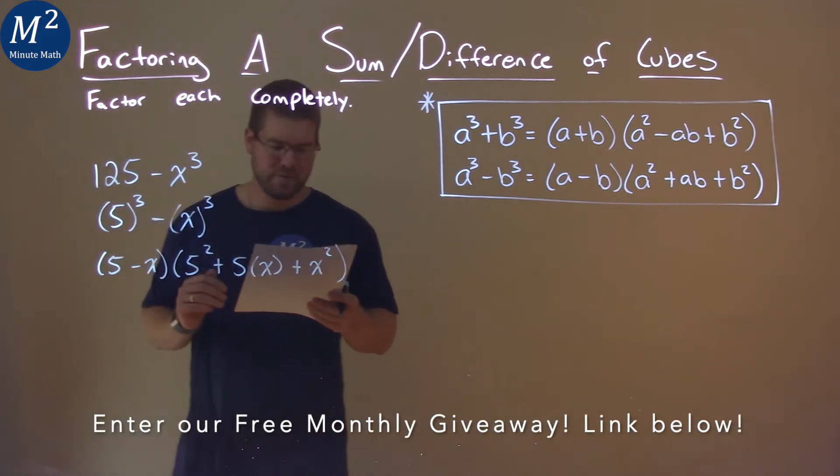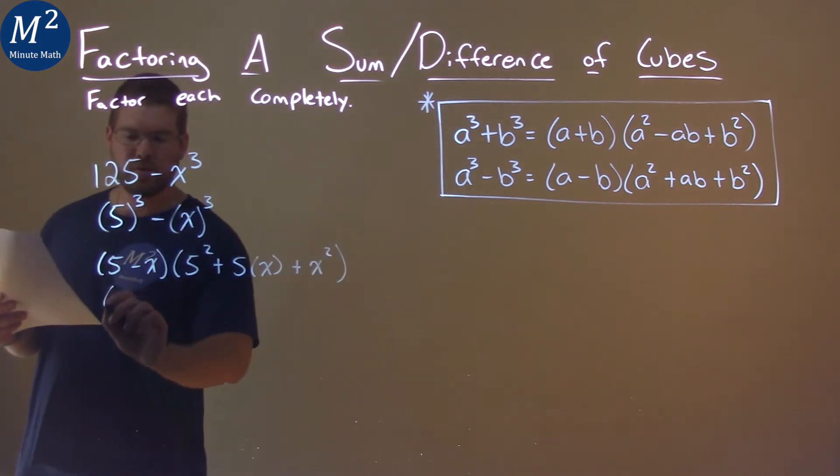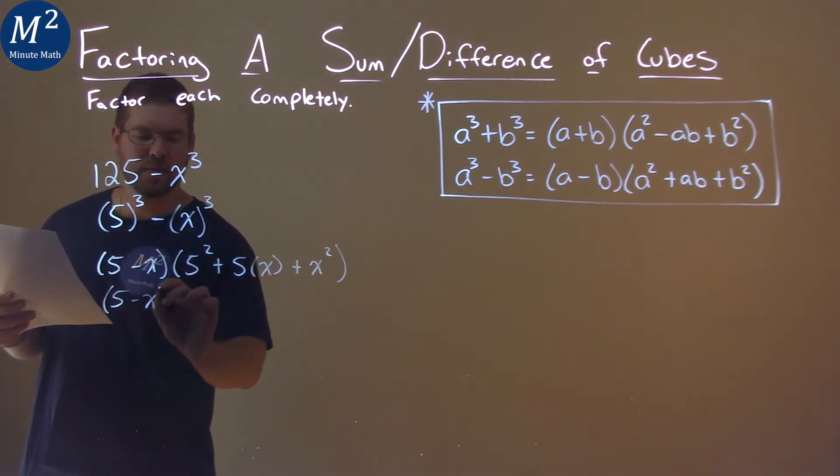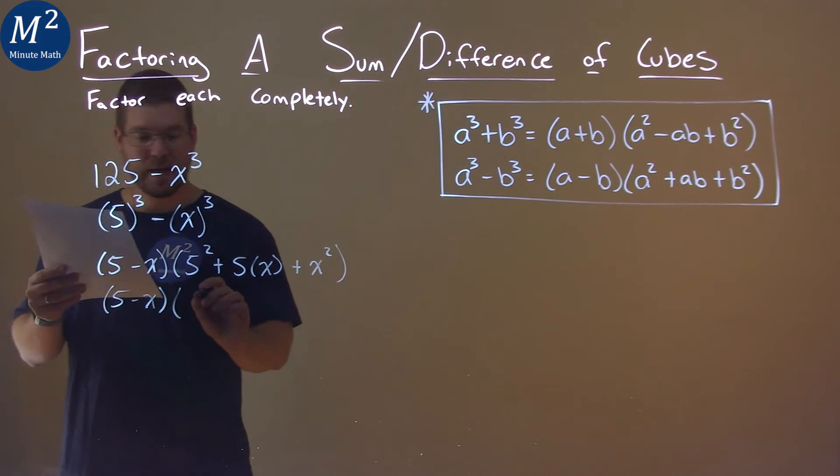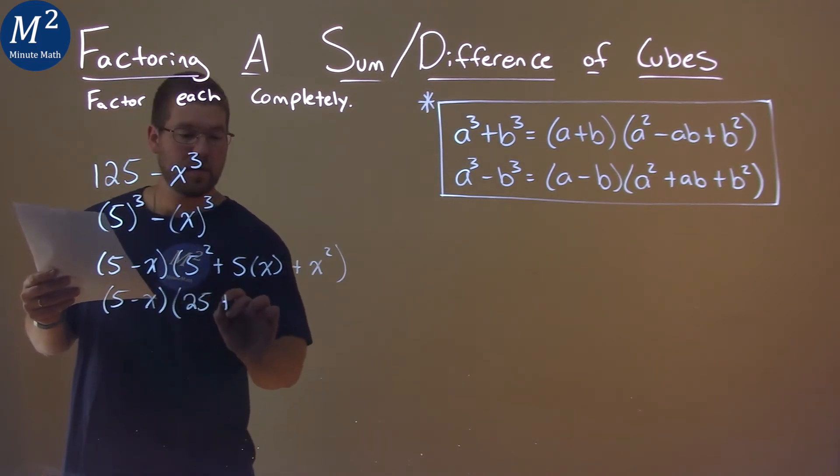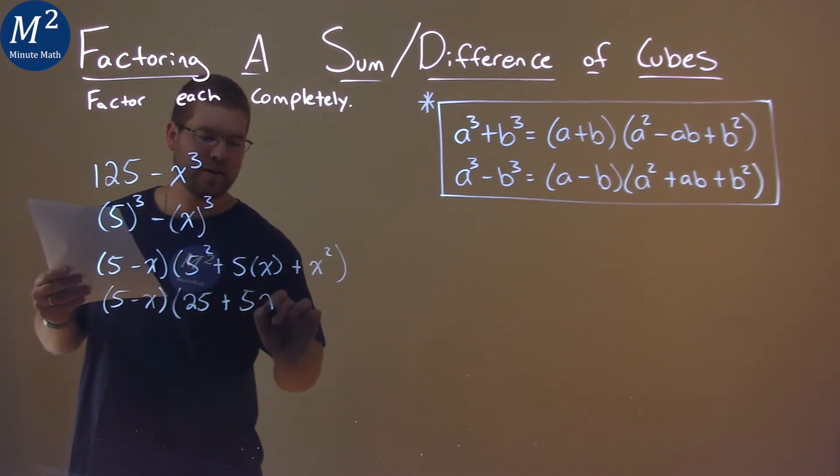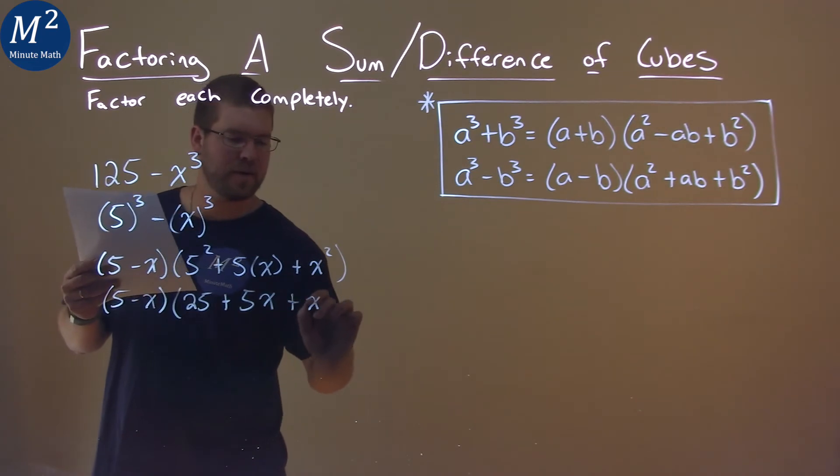And now we just have to simplify this. We still have a 5 minus x here, and then 5 squared is a 25, 5x, I'll just write it as 5x, and x squared. Not too much work here.